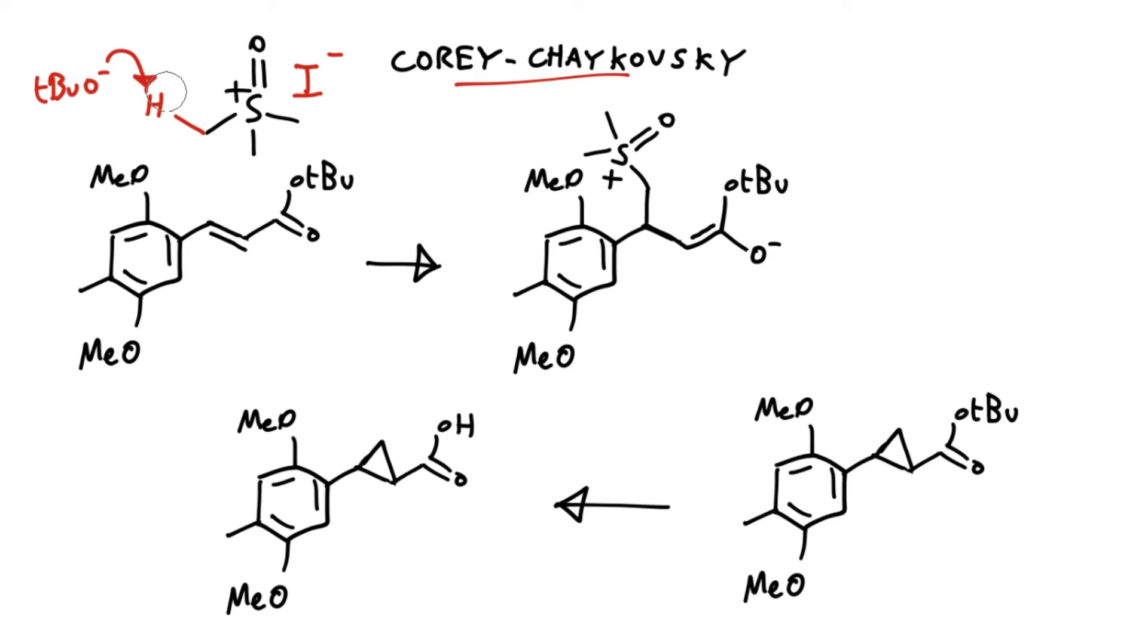That can deprotonate the reagent at this position to generate an anion here on the methyl group. Obviously all these methyl groups are equivalent. It doesn't matter which one you deprotonate. Then we can add into the double bond of the cinnamic ester and do a conjugate addition like this. But the interesting thing about this carbon here, which is the reacting center, is that it had nucleophilic character as an anion. But it also bears a leaving group as this S+ here. So rather than just protonating like normal Michael addition, what we actually get is the intramolecular process. When the electrons come back down, they can attack the carbon that we just added into the double bond.